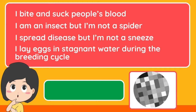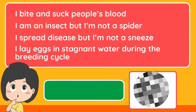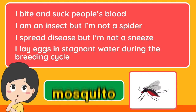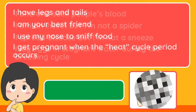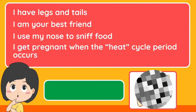I bite and suck people's blood. I am an insect but I'm not a spider. I spread disease but I'm not a sneeze. I lay eggs in stagnant water during the breeding cycle. What am I? — I have legs and a tail. I am your best friend. I use my nose to sniff food. I get pregnant when the heat cycle period occurs. What am I?